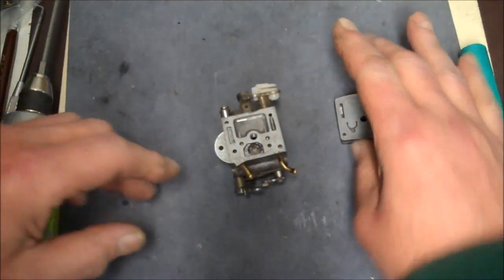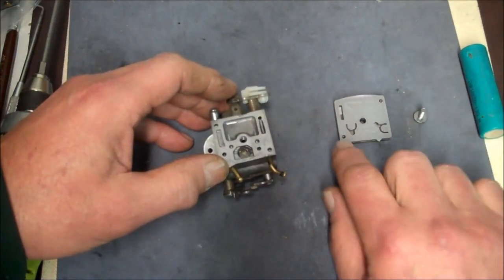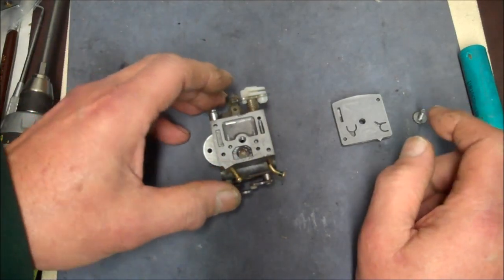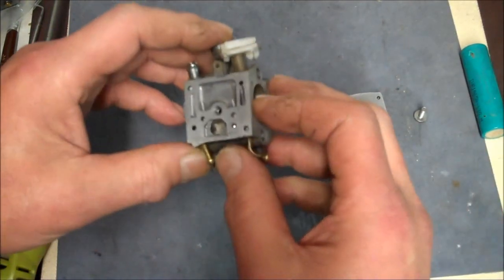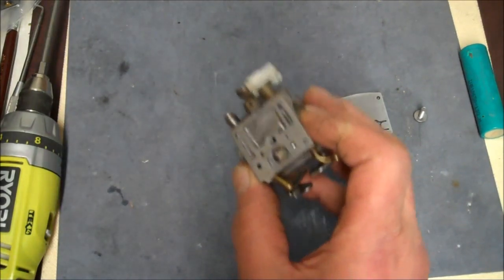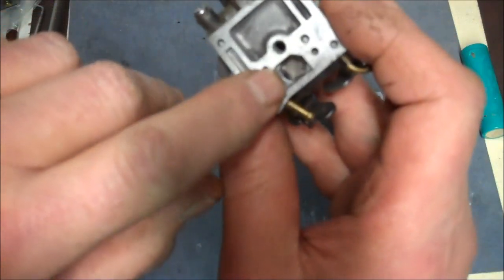It's not a diaphragm like the other side, but that's basically it's acting like one. And then we have the gasket next. And then the cover has two little tits on it to keep you from being able to put this on the wrong way.